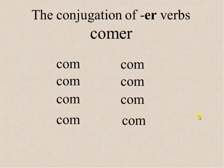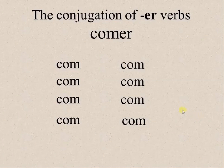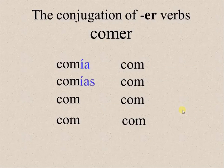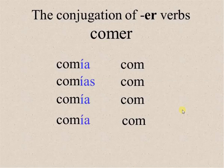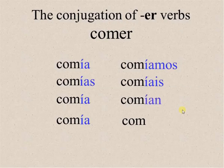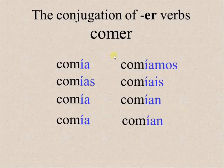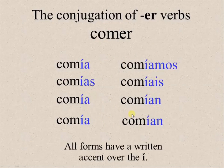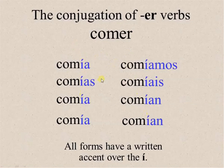Now let's see ER verbs. For example, the verb comer. You start with the stem and you go: Yo comía — with an accent mark. Tú comías. Él o ella comía. Usted comía. Nosotros comíamos. Vosotros comíais. Ellos, ellas comían. What do we see here? All the forms receive an accent mark — all of them. The accent marks go over the I.